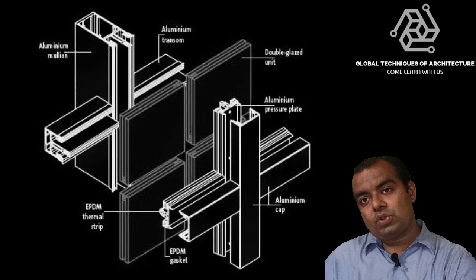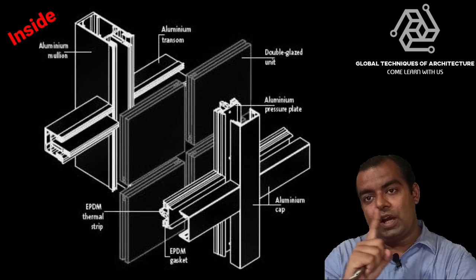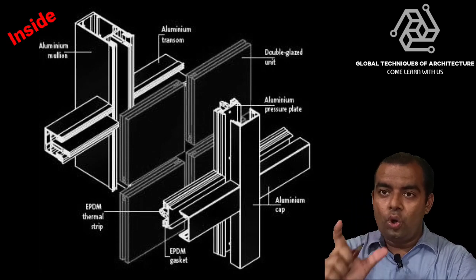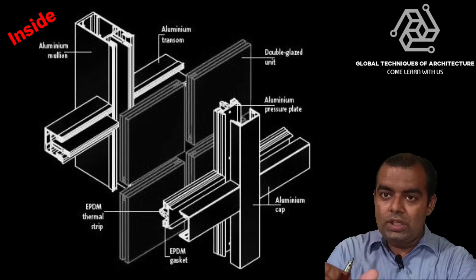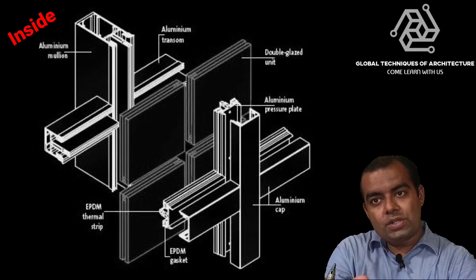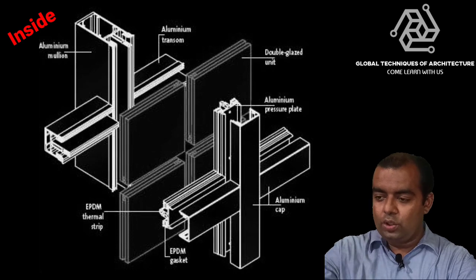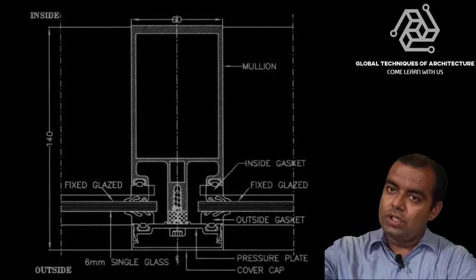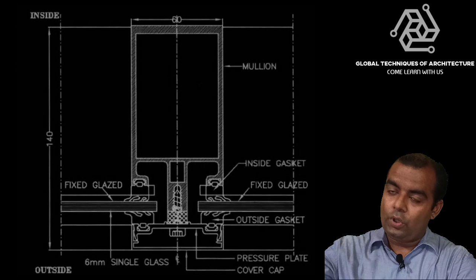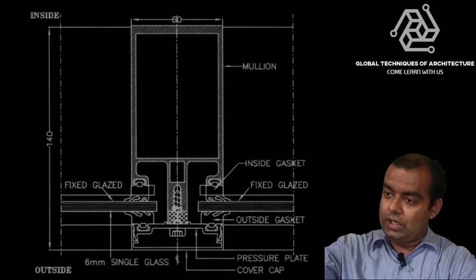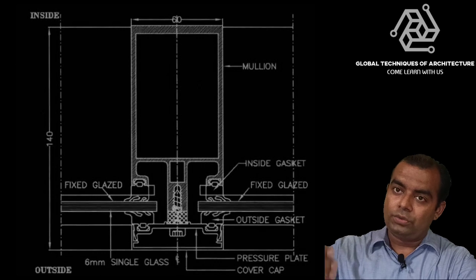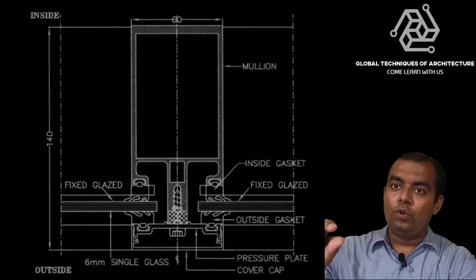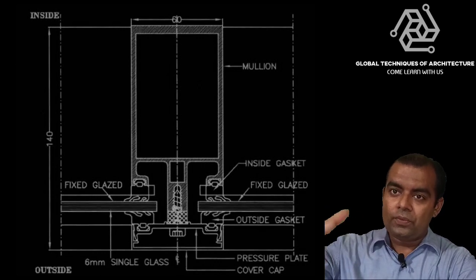So the first system that we understood was conventional cap curtain wall. If you go and look at the system from inside, what you see is only a box system, only a box. You directly see the glass, you see the cover cap because the pressure plate is inside. So at the time of just visiting the building, you would be just able to see the box.